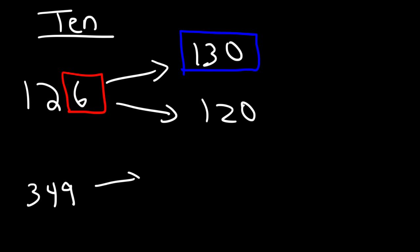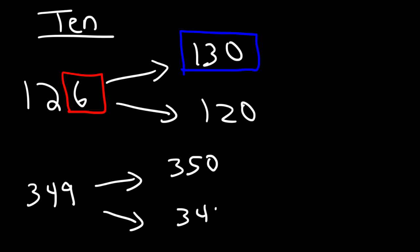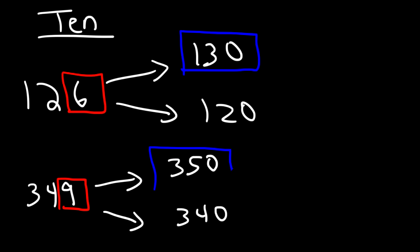Now 349. We're going to keep the four or change it to a five, so it's either going to be 350 or 340 if we're rounding to the nearest ten. Well, looking at the nine — this is in the category of five or more, so therefore we need to round it up to 350.